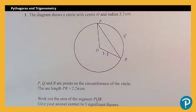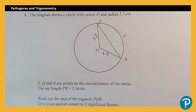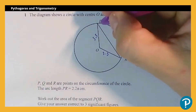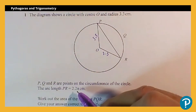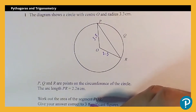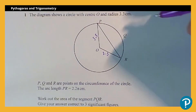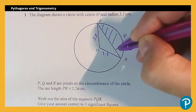That also means this side here is 3.3, because the radius is the same. We've got P, Q, and R as points on the circumference of the circle. It tells me the arc length PR — so this curve here — is 2.2 pi centimetres. We need to work out the area of the segment PQR. So the segment is this section here — that's what we're trying to work out.